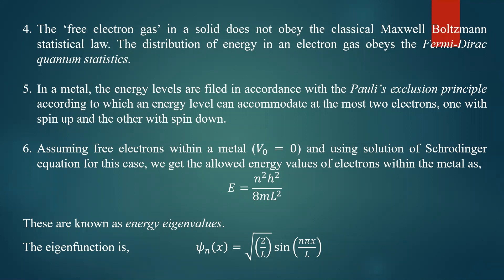Electrons are distributed such that every energy level can be occupied by only two electrons. For example, in helium, in the 1s sub-shell only two electrons are present. If there is a third electron, it must go to the next shell — 1s², then 2s², then 2p⁶, and so on. That is how electrons are distributed in accordance with the Pauli exclusion principle.